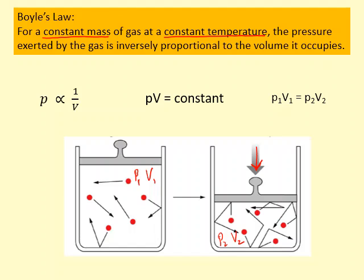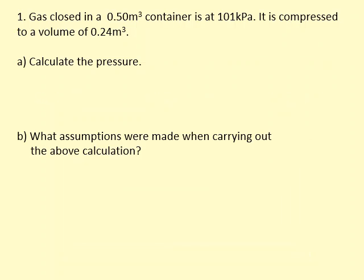Gas closed in a 0.50 cubic meter container is at 101 kilopascals. That's actually atmospheric pressure—101,000 pascals—and that is the pressure on us right now due to the Earth's atmosphere.